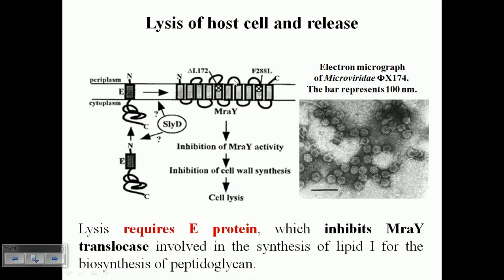MraY is required because it produces lipid I for the biosynthesis of peptidoglycan. So if somebody blocks MraY, then peptidoglycan synthesis will be blocked or halted. This is what happens in the case of release by protein E — protein E is being produced.